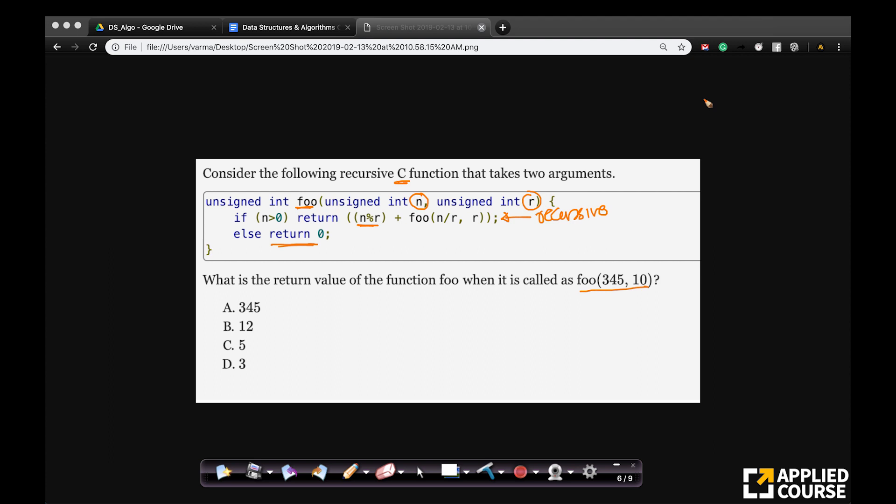So, let us actually write it down. I am calling foo 345 comma 10. Let us see what happens. n greater than 0, so return n percentile r.